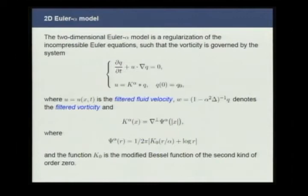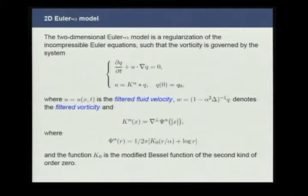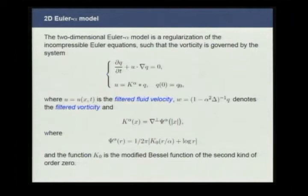Regarding the two-dimensional Euler-alpha model: for the three-dimensional Euler-alpha model it is an open problem whether weak solutions exist, but for the two-dimensional Euler-alpha model this is well established. The two-dimensional Euler-alpha model is a regularization of the incompressible Euler equation where the vorticity is governed by the system. In this regularization, the singular kernel of the Biot-Savart law is replaced by a smooth kernel K-alpha, and U is the filtered fluid velocity. The parameter alpha is a regularization length scale reflecting the width of the filter.